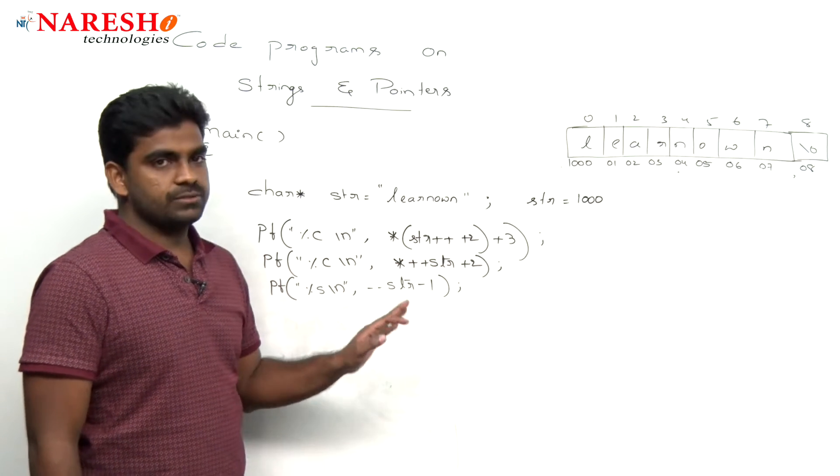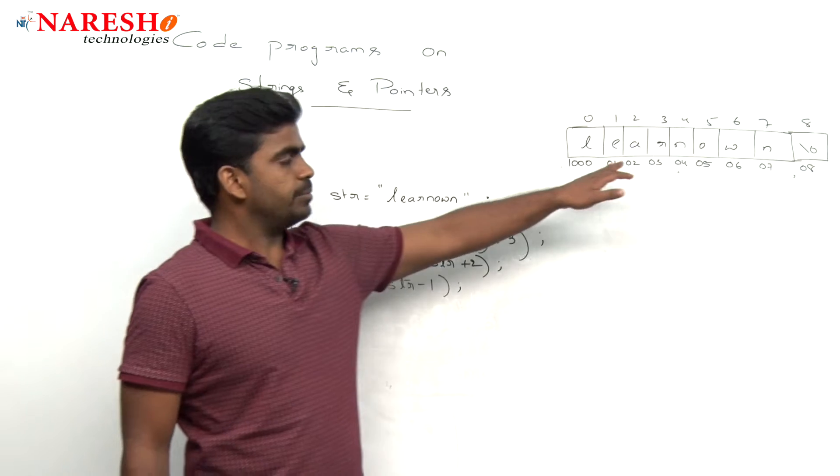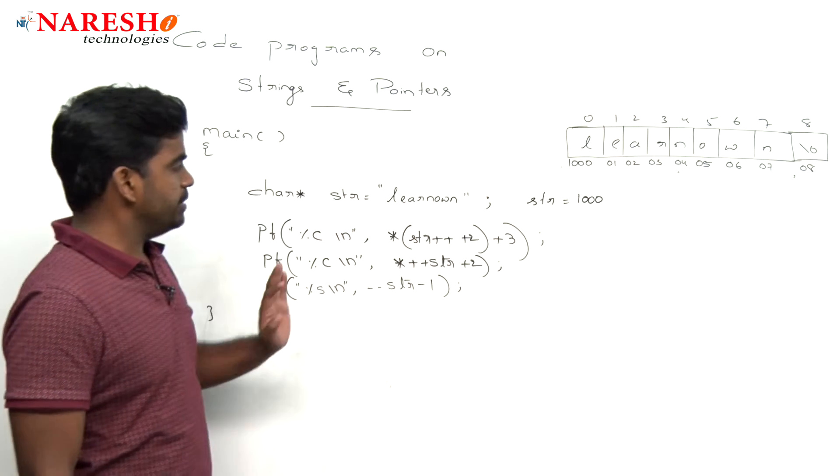So after evaluation of these three, what is the output? And here it is, we allocated the memory and that string variable pointing to the base address. So based on that we are evaluating.